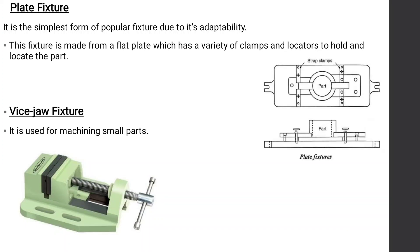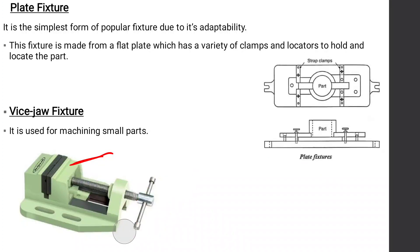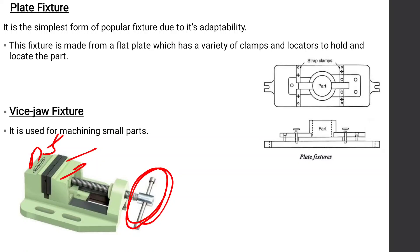The vice is mounted on the milling machine using a nut and bolt, which fixes it to the machine. Using the handle, the jaw moves in both clockwise and anti-clockwise directions. When it moves anti-clockwise, the movable jaw moves backward; when it moves clockwise, the jaw moves forward. The workpiece is fixed between the two jaws to hold and support it.